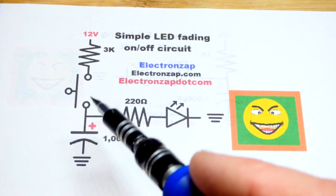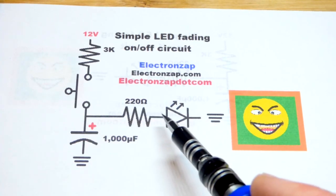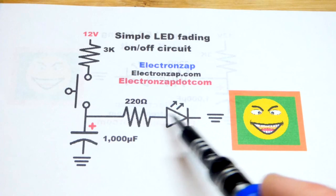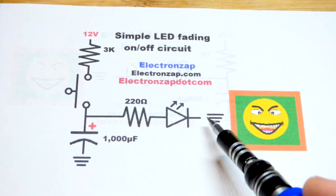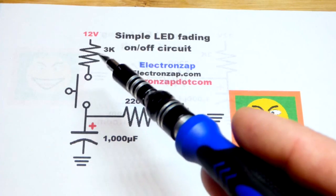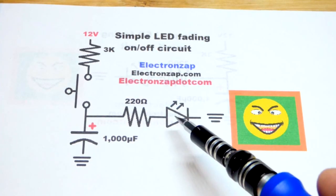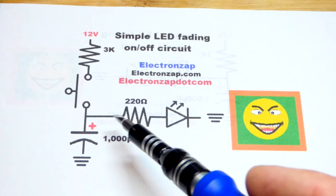Now while the capacitor is charging when we press the button voltage is going to rise, the LED is going to go from off or not very on to getting brighter and brighter until it gets to steady state. So again with the voltages and resistances we're using it's not going to get terribly bright, especially the red LED, but we'll see the fading effect.